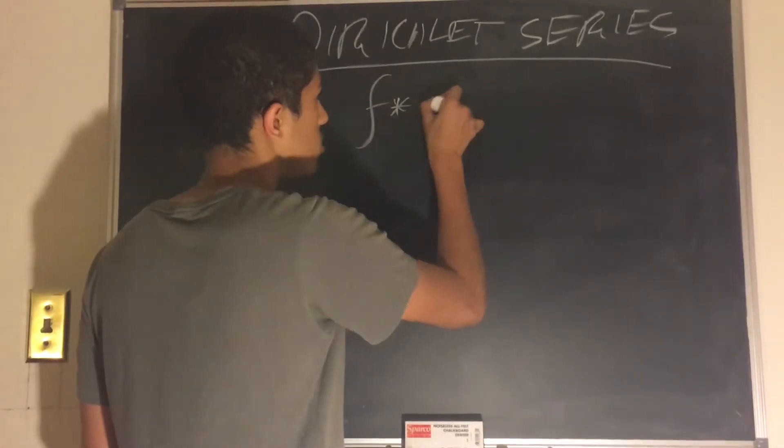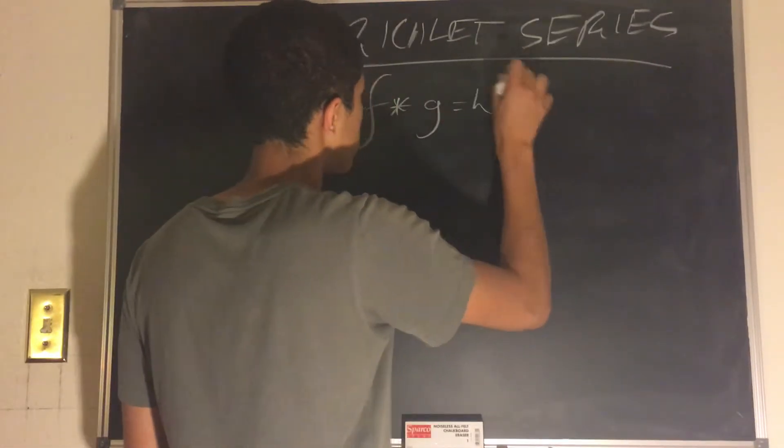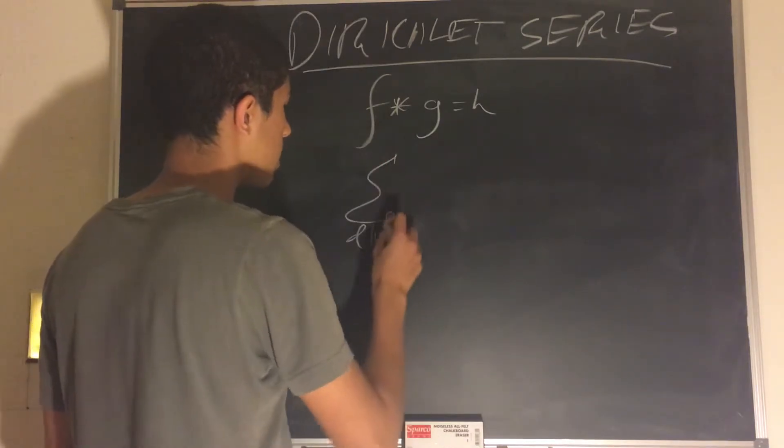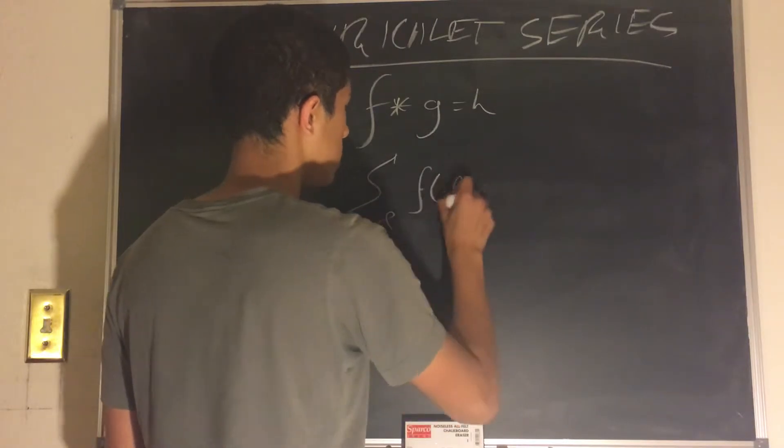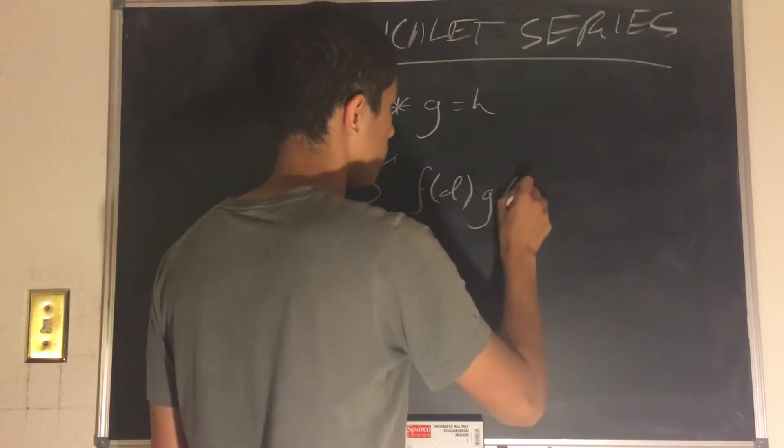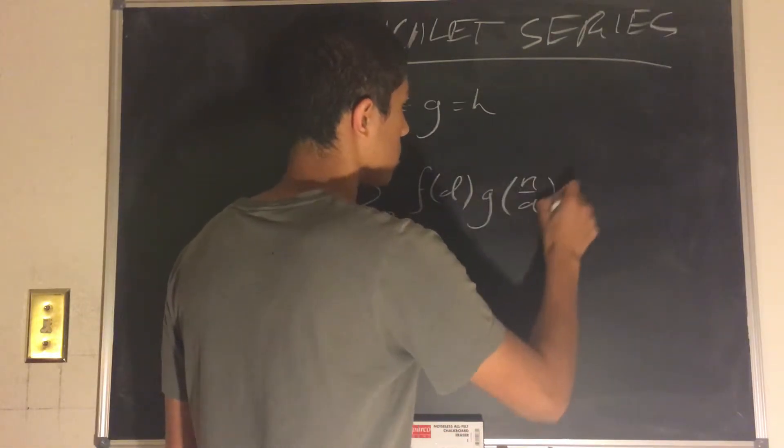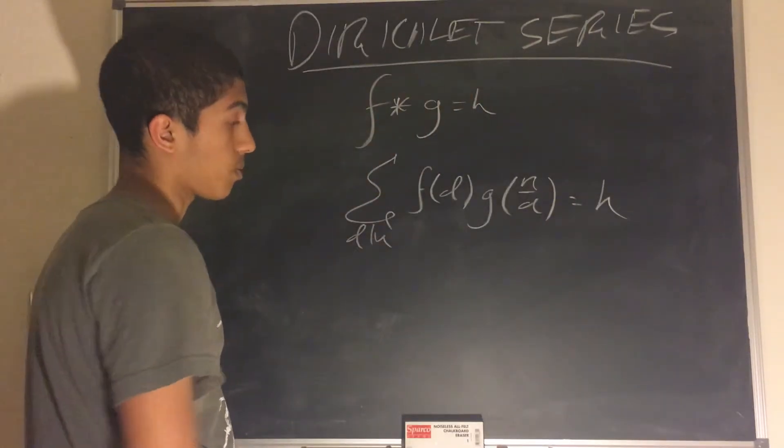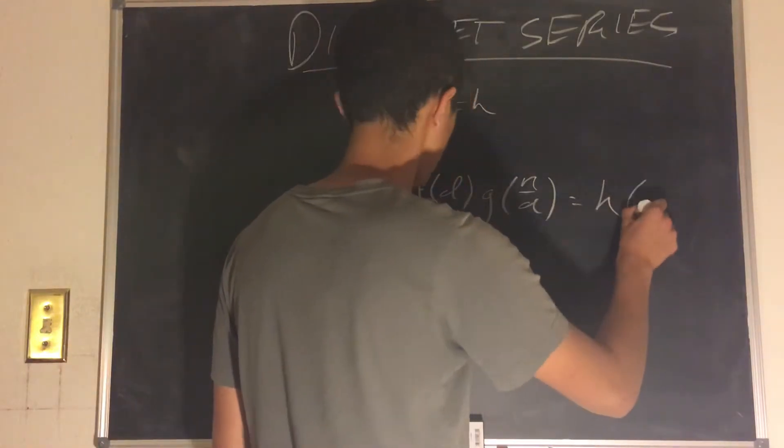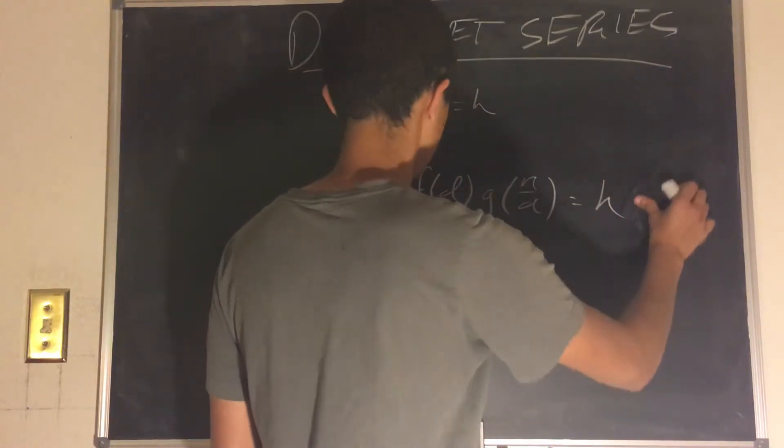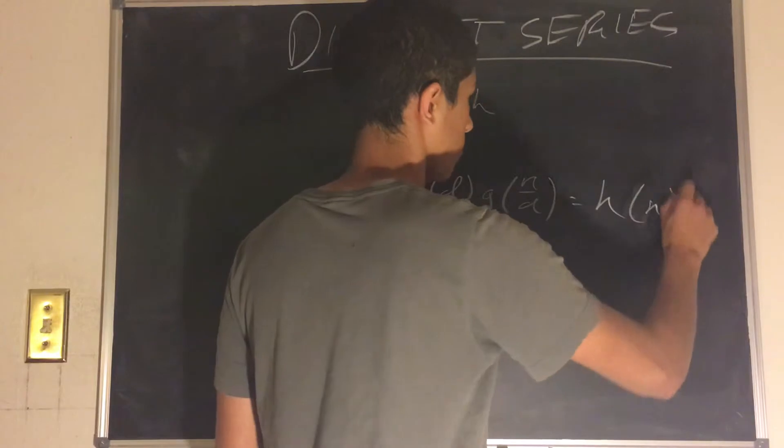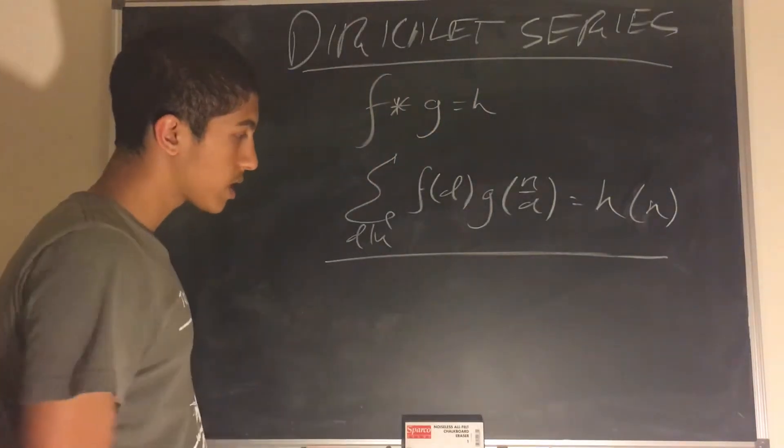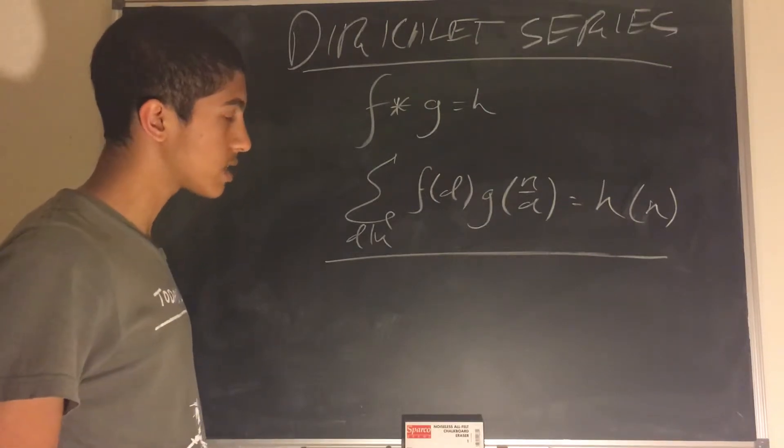f convoluted with g equals h implies that sigma d divides n, f of d, g of n over d is equal to h of n. So this is a Dirichlet convolution, and we can work with Dirichlet series in a similar way.